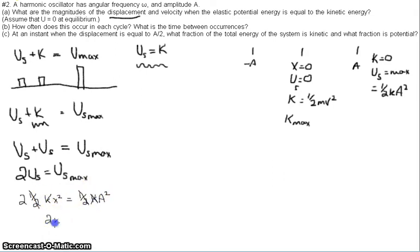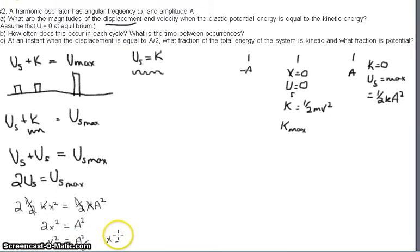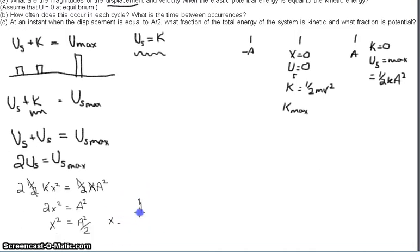And we're going to be left with 2x squared is equal to a squared. Well, to figure out that position, we divide both sides by 2, we have a squared divided by 2, and then when you take the square root, x is equal to a divided by the square root of 2.